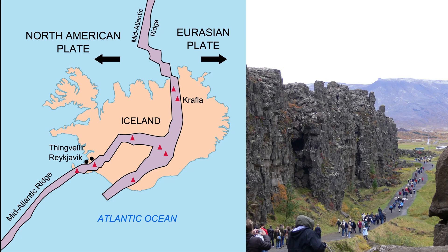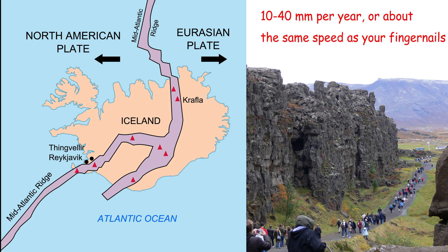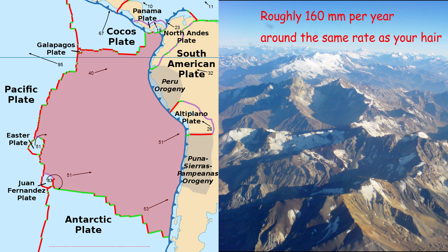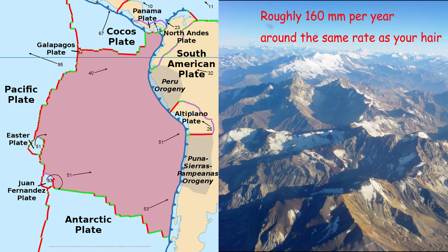Plate movements can vary from 10 to 160 mm per year. The mid-Atlantic ridge, for example, grows at roughly the same rate as fingernails, whilst the Noska plate shrinks at roughly the same rate as hair grows.